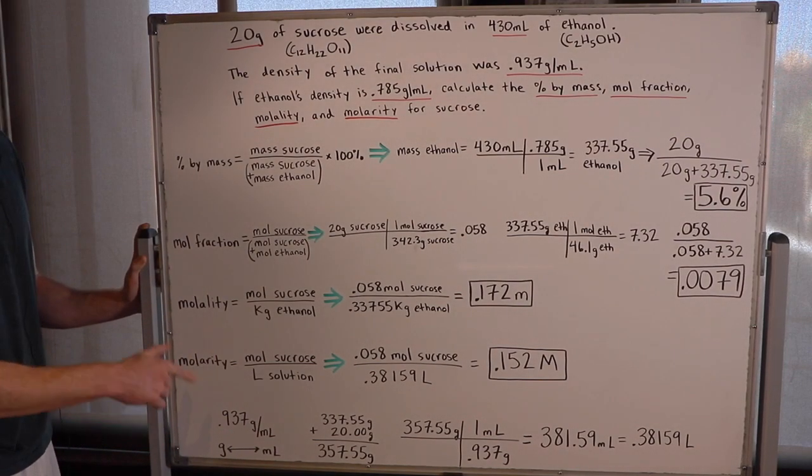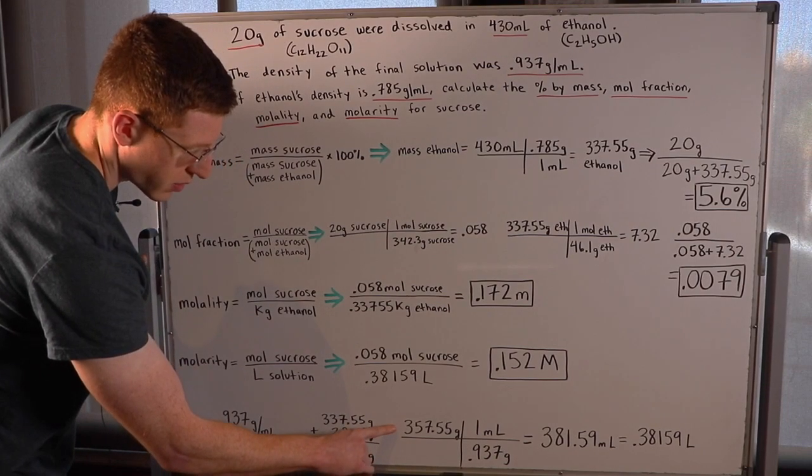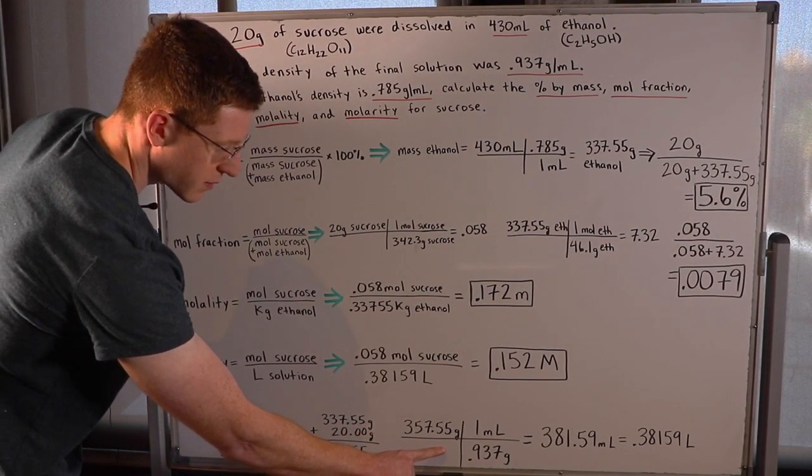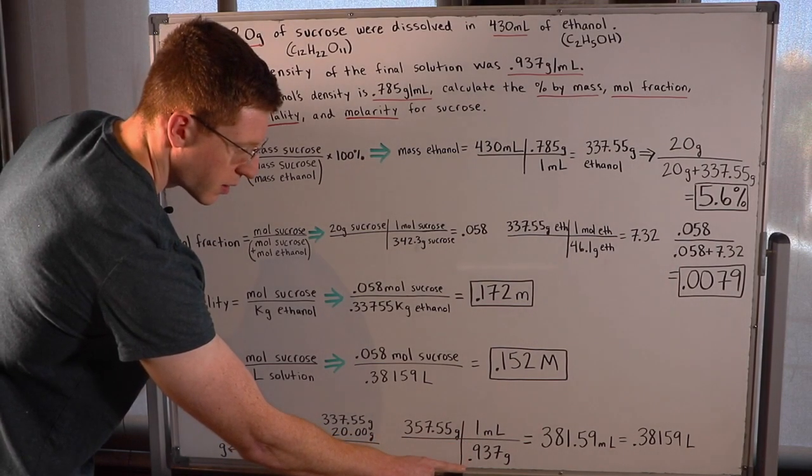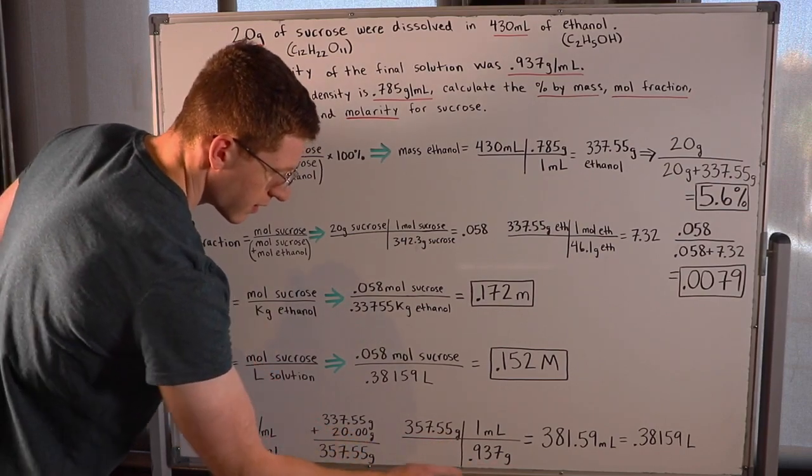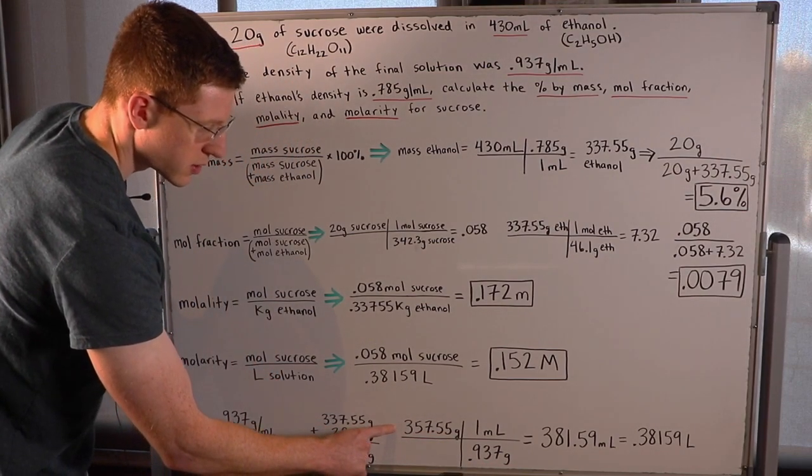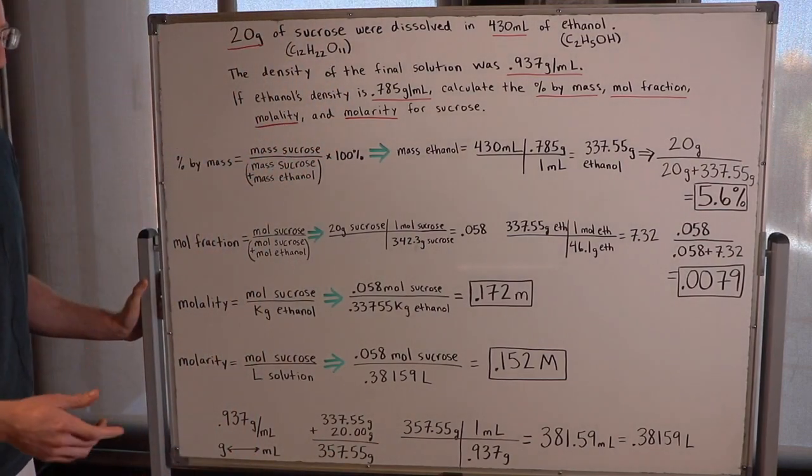So since we have the density, we can find the total volume of the solution. All I'm going to do is set up this conversion where I have the total mass of the solution times the ratio of the density one milliliter per 0.937 grams. And I can cancel out grams here. And I find that the total solution must have a final volume of 381.59 milliliters.